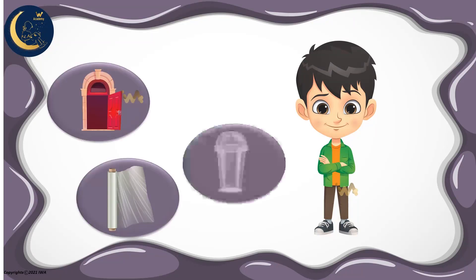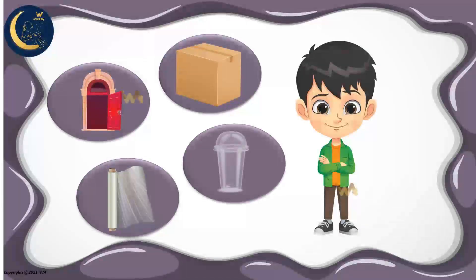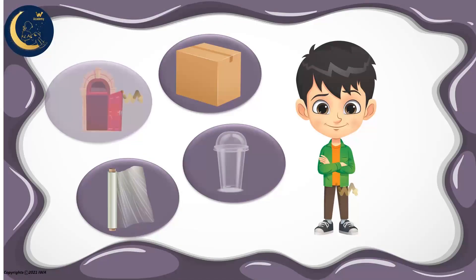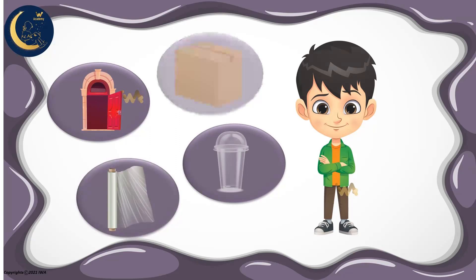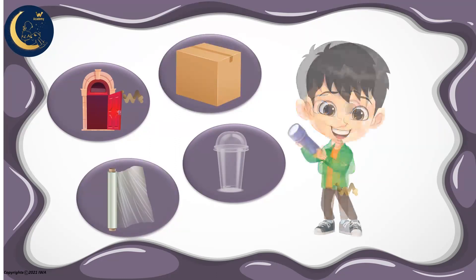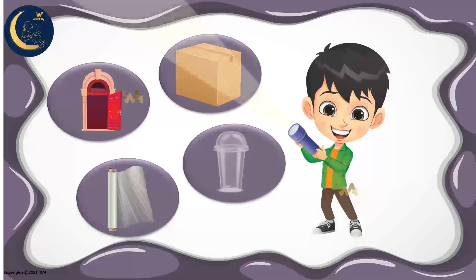And now my friends, we have these objects: a wooden door, a plastic cup, plastic wrap, and a box. We will shine a light through each object and determine whether each object is a transparent object or an opaque object.